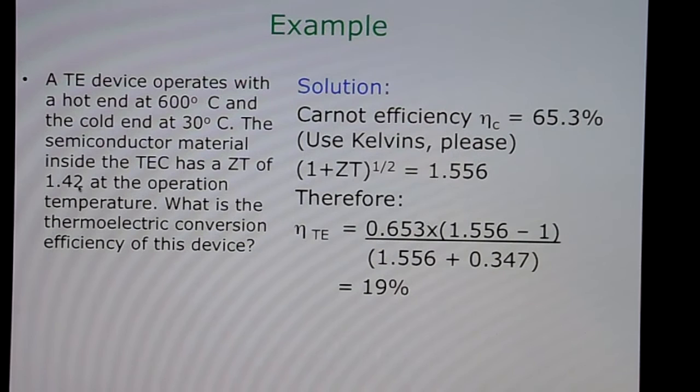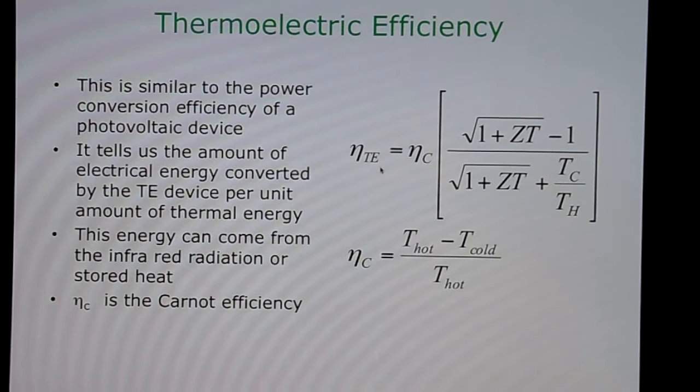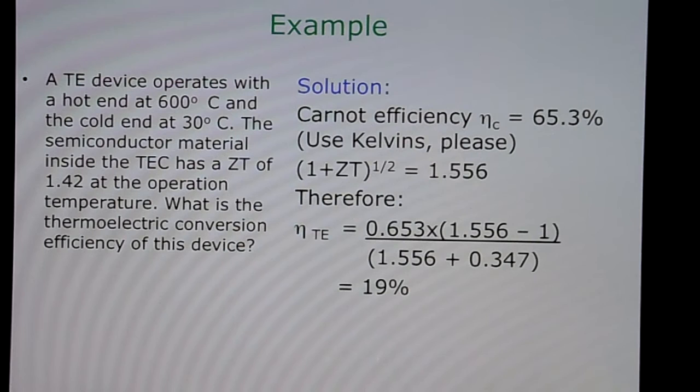Next, we substitute ZT at the operating temperature. The square root of (1 + ZT) works out to be 1.556. Substituting into the equation for eta_TE, we get a thermoelectric efficiency eta_TE of 19%.